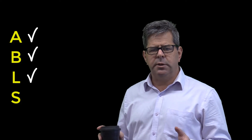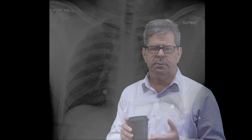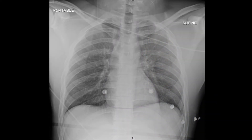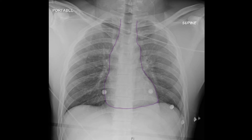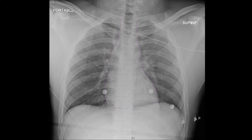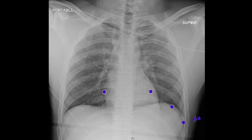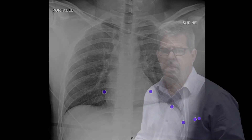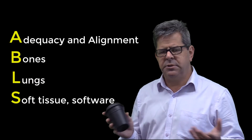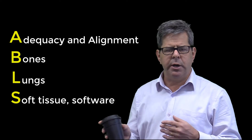Finally, S for Soft Tissue and Software. The big soft tissue is, of course, the heart — is it being pushed, and is the size okay? Move cranially to the mediastinum: is it widened? If so, it may have some blood there. Can you see a distinct aortic knob? If not, it may well be a traumatic dissection hanging by a thread. Don't forget the soft tissue of the chest wall — can you see air in the tissues from a traumatic pneumothorax? For software, look for ECG leads, endotracheal tubes, nasogastric tubes, chest tubes — are they all in the right spot? So, A, B, L, S. Doesn't sound too hard to remember. Let's try it out with some examples.